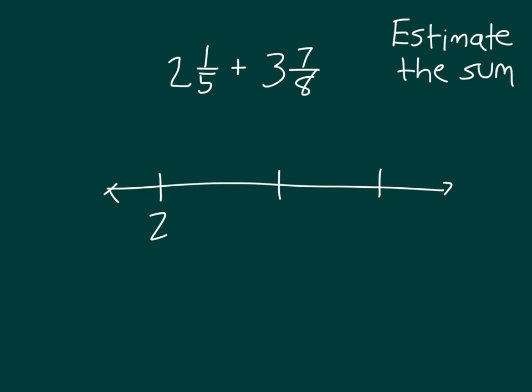Here are the whole numbers 2, 3, and 4. If we had 2 and 1 fifth, it would be a little bit past 2 on the number line — 1 fifth past 2. If we were to round it, we would round down to 2.